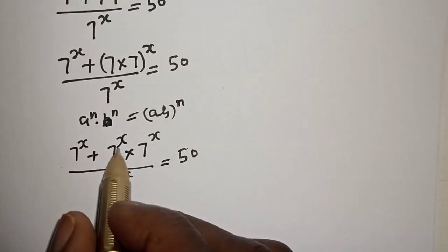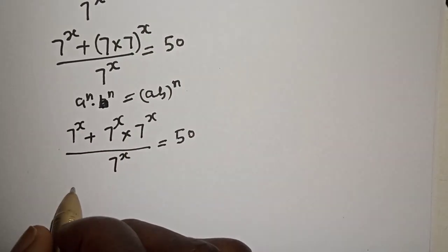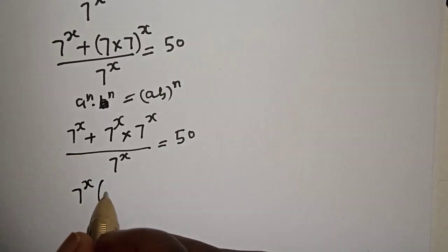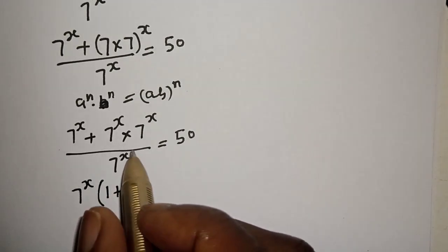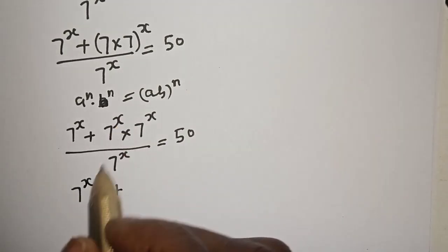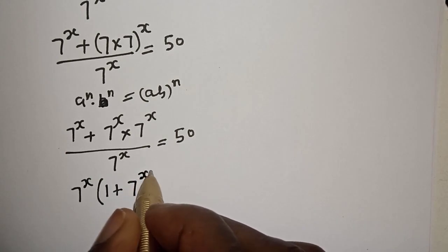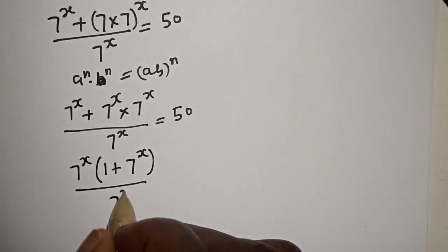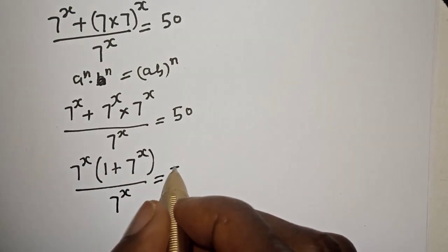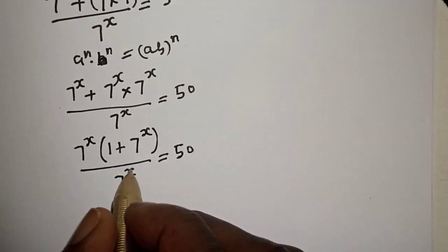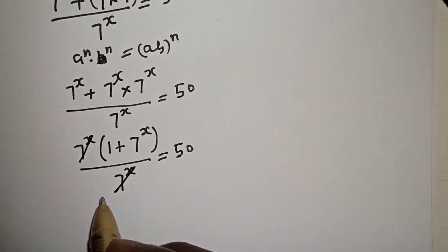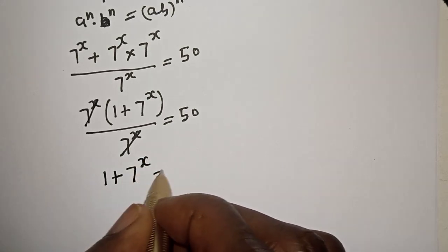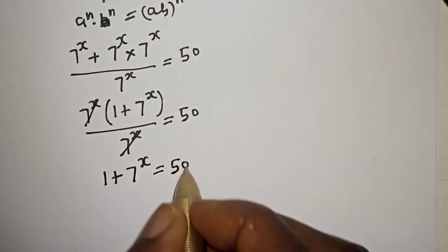Now from the numerator, 7 raised to power s is common — let's bring it out. We get 7 raised to power s times the quantity (1 plus 7 raised to power s), divided by 7 raised to power s, is equal to 50. The 7 raised to power s cancels, leaving 1 plus 7 raised to power s is equal to 50.